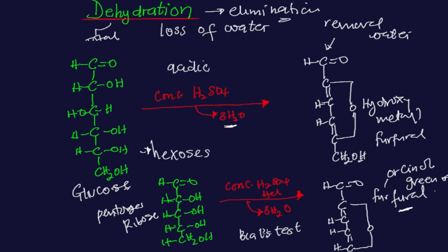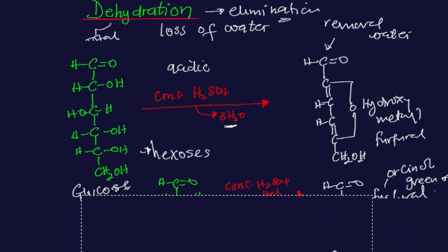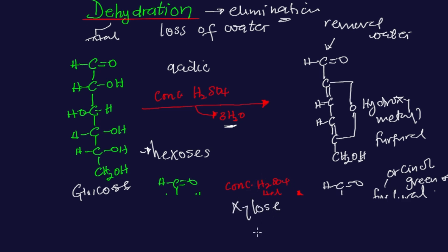One thing about Bial's test is that it is commonly used for the detection of xylose in urine. It is mostly used whenever urine analysis is carried out — you can simply use Bial's test to check for the detection of xylose in urine. That's just it when it comes to the dehydration of ribose sugar.